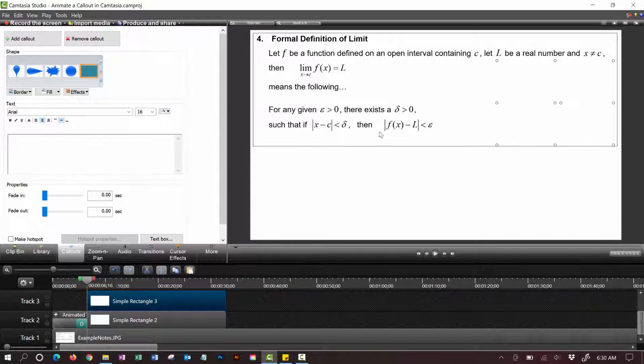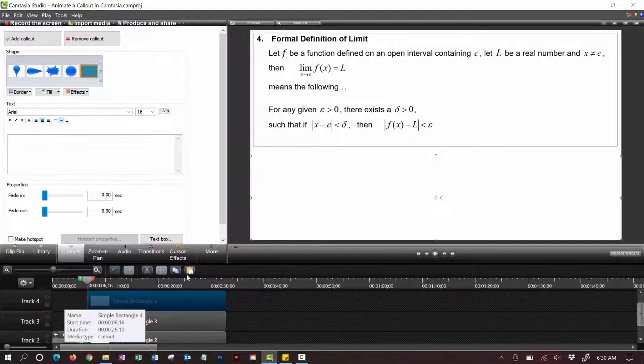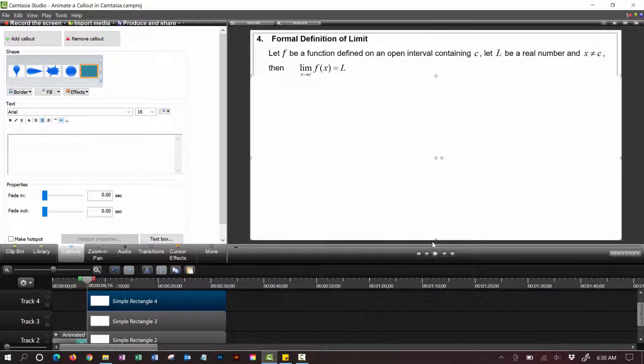And maybe I want a third box that covers up this part of the definition. So I can just do another control V paste another box in there and move that one to cover up the rest of the definition here.